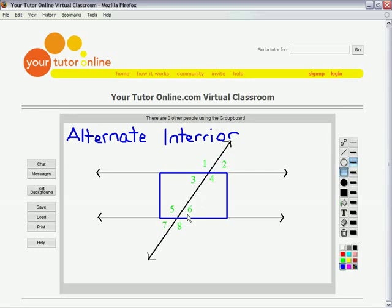Angles 3, 4, 5, and 6 are all interior angles. Alternate means to get to its pair, you need to cross the line and go to the other side.